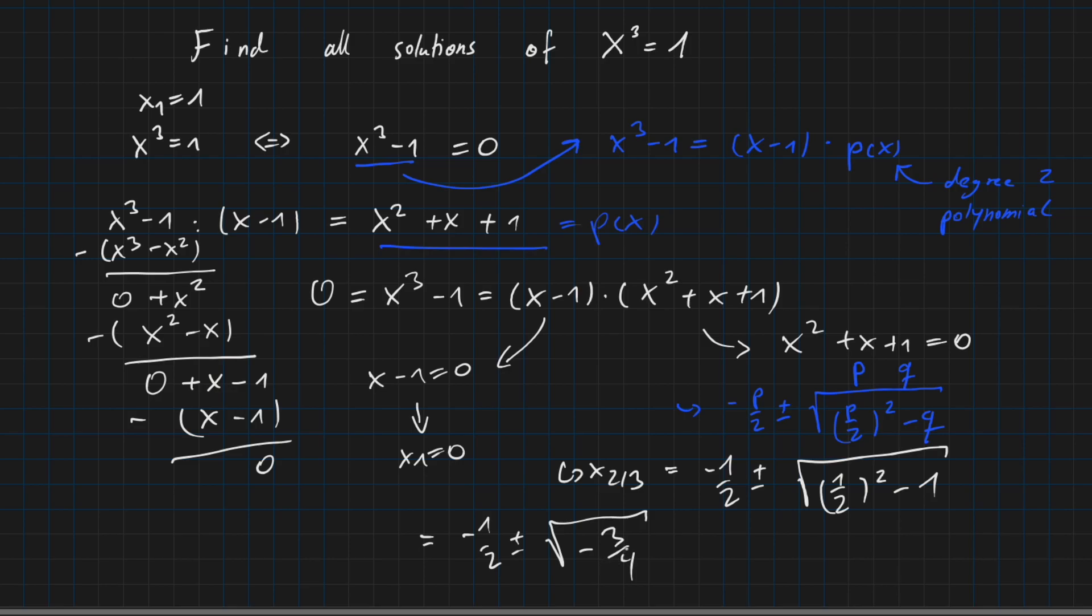But if we allow complex numbers, we can still continue from here. Because then we can write this term as minus 1 over 2 plus minus the square root of minus 1 times 3 over 4. And this is minus 1 over 2 plus minus i, our complex identity, times the root of 3 over 2. And these are complex numbers.